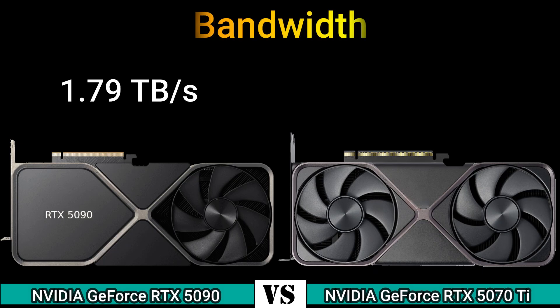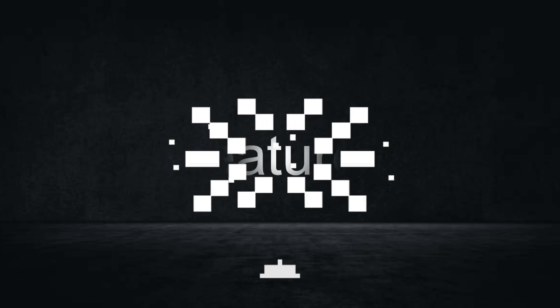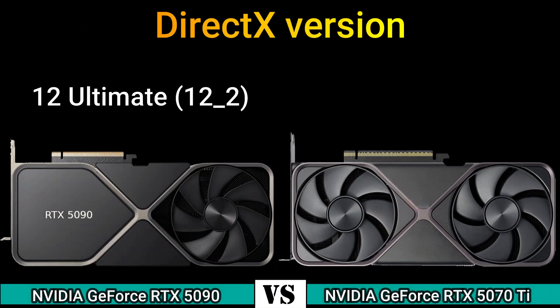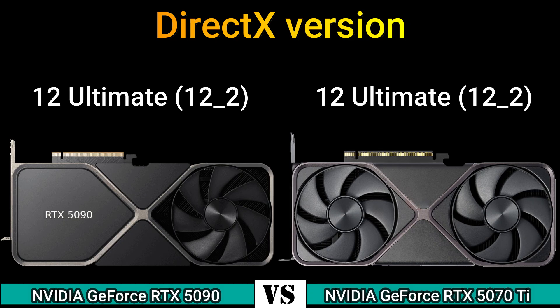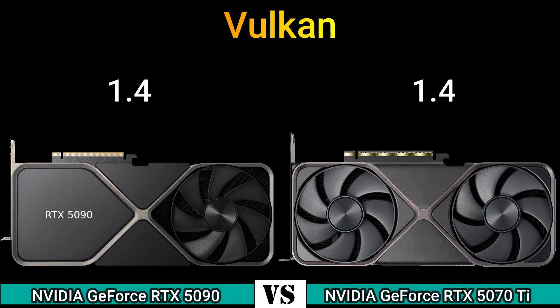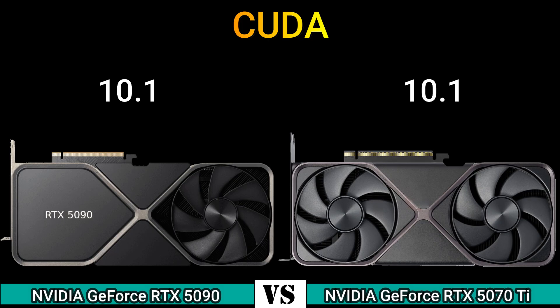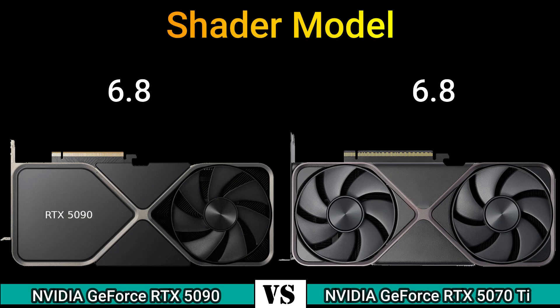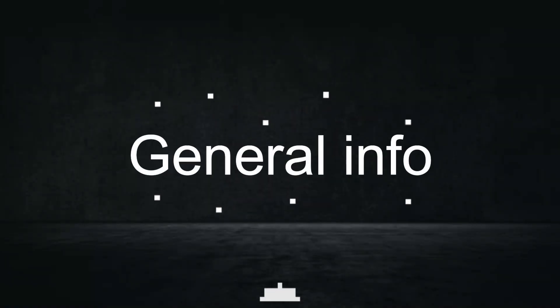Bandwidth: 1.79 TB/s and 896.30 GB/s. Features — DirectX version 12 Ultimate 12.2, OpenGL version 4.6, OpenCL version 3.0, Vulkan 1.4, CUDA 10.1, shader model 6.8.